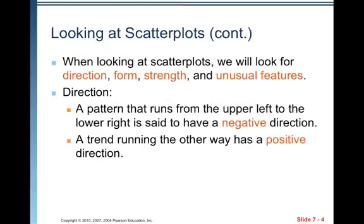When looking at scatterplots, we will look for direction, form, strength, and unusual features. For direction, a pattern that runs from the upper left to the lower right is said to have a negative direction. A trend running the other way has a positive direction.